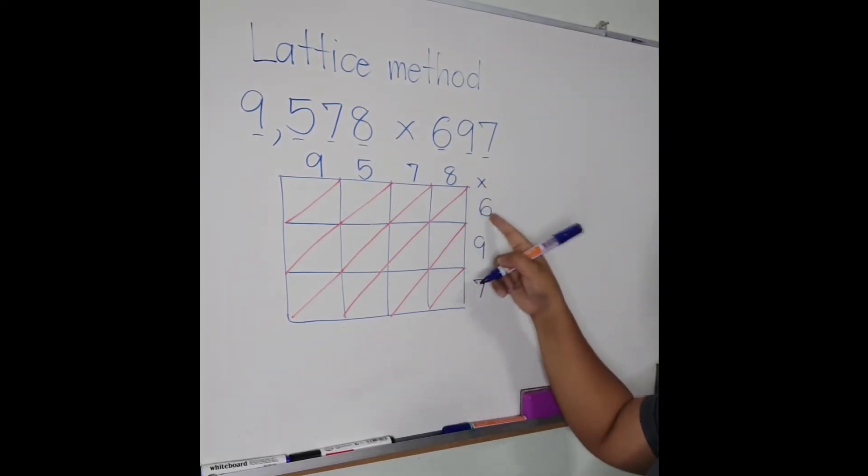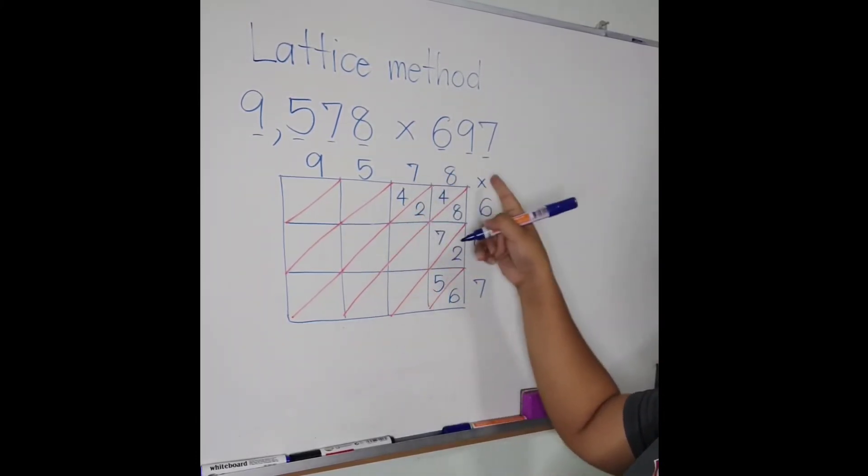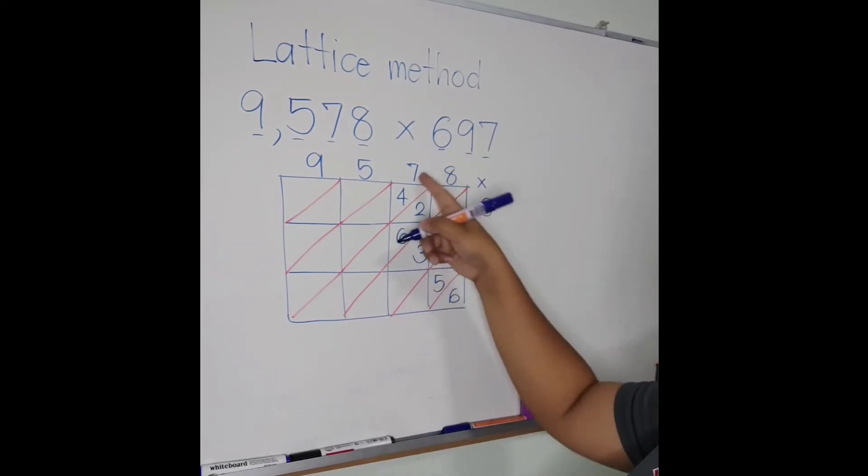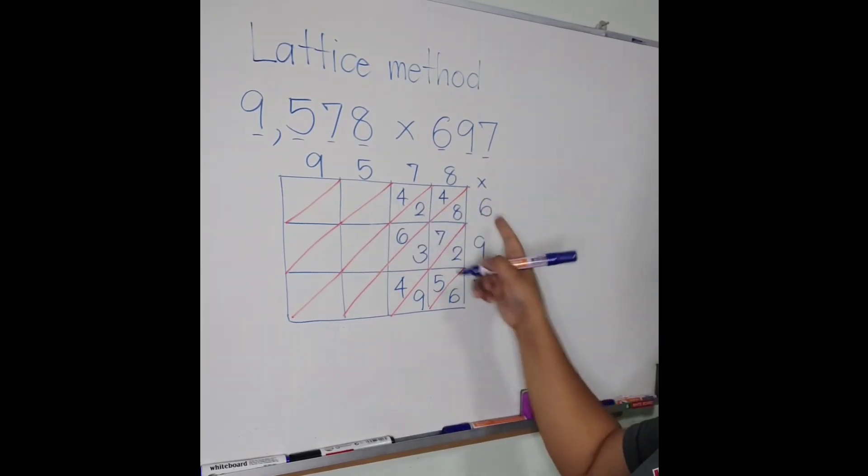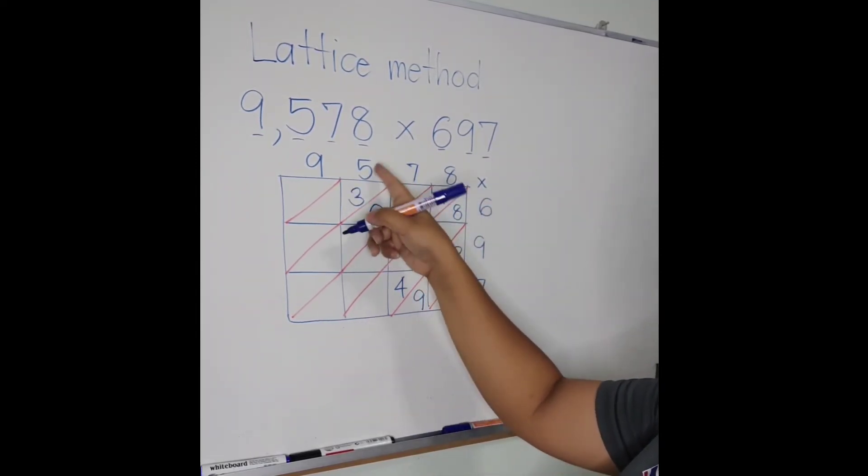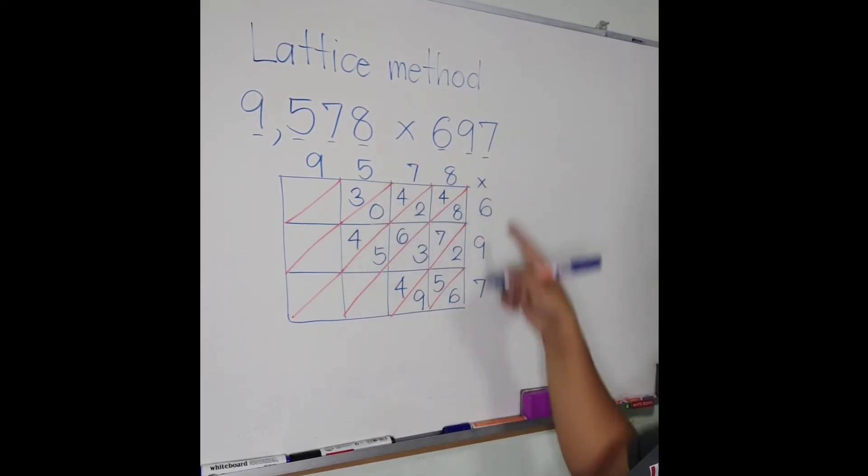So 8 times 6 is 48, 8 times 9 is 72, 8 times 7 is 56. 7 times 6 is 42, 7 times 9 is 63, 7 times 7 is 49. 5 times 6 is 30, 5 times 9 is 45.